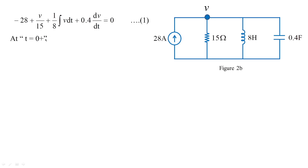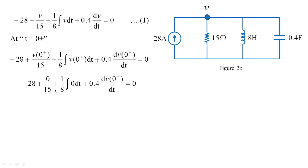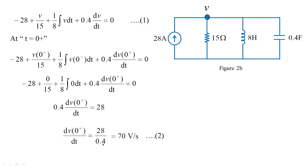At t equal to zero plus, substituting the initial values into equation 1: since v(0+) = 0, those terms vanish, leaving 0.4·dv/dt(0+) = 28. Therefore dv/dt at 0+ equals 28/0.4, which gives 70 volts per second.